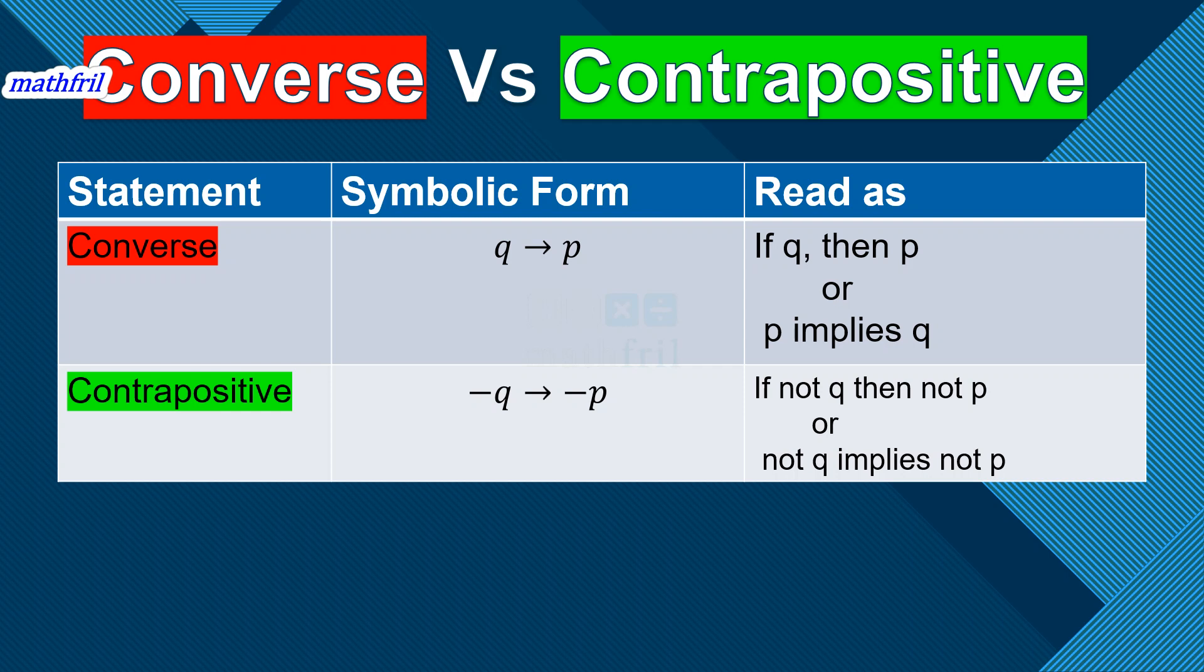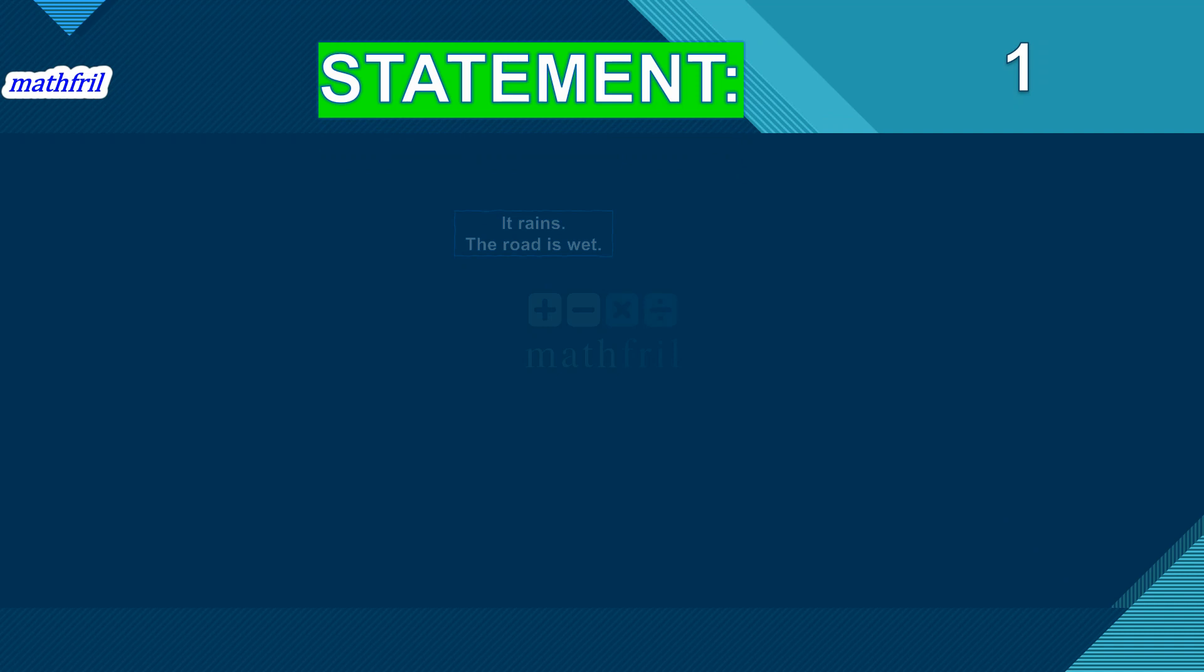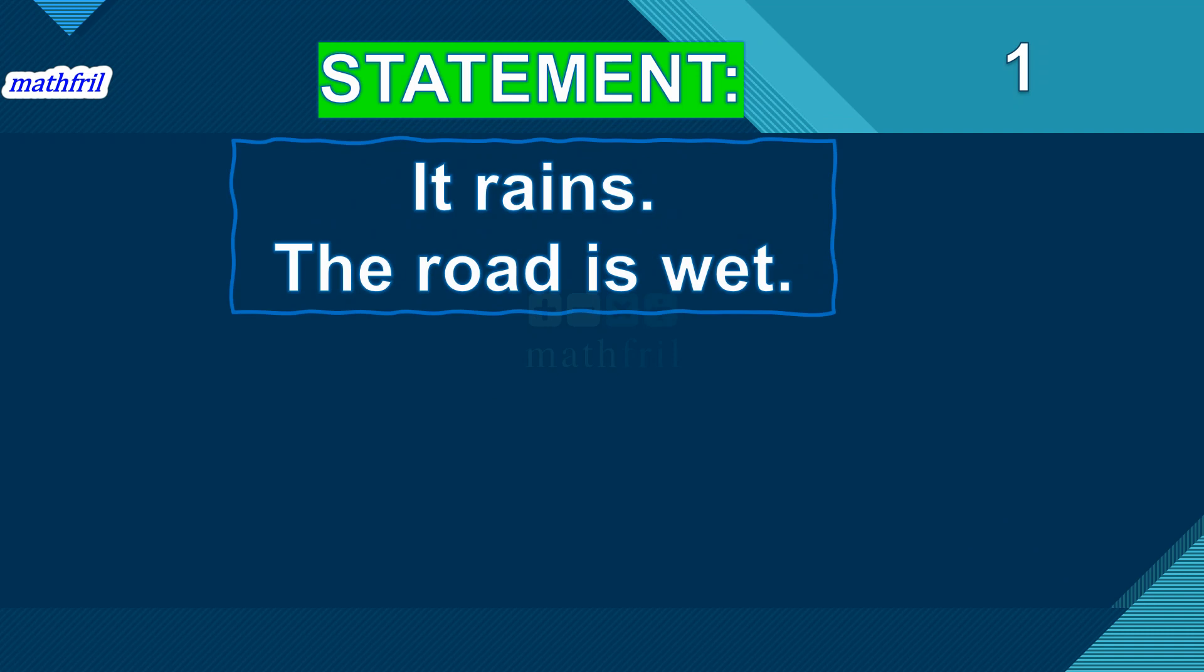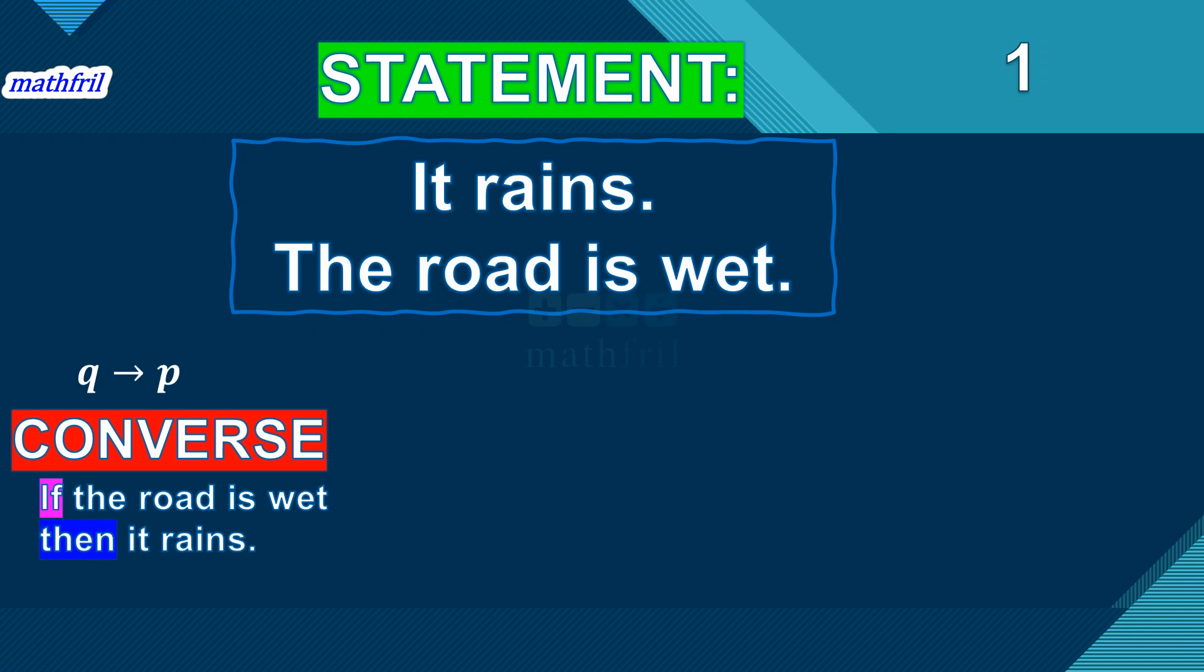For an example here, the same example in our part 1 and part 2, but different uses of phrases. It's Q implies P, the converse. So if the road is wet, then it rains. In the contrapositive, we just add the not there.